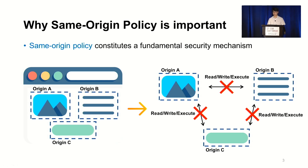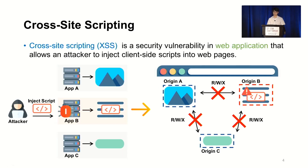If two origins have any different element, the two origins are considered cross-origin. Cross-origin resources cannot read or execute each other. Cross-site scripting (XSS) is the most well-known vulnerability in web applications. Using XSS, an attacker can inject client-side script into a web page. If the attacker injects the script into vulnerable web application B, the injected script is also loaded when the victim loads the page, thereby performing cross-site scripting. However, thanks to the same-origin policy, the attacker's script is executed as origin B and cannot access origin A or C.